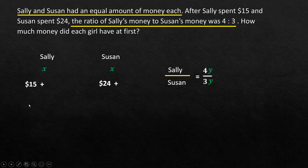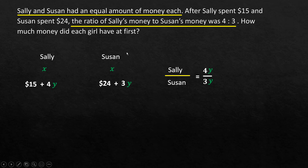So Sally's total money is 15 + 4y and Susan's total money is 24 + 3y. Both equal x, so they are equal to each other: 15 + 4y = 24 + 3y.